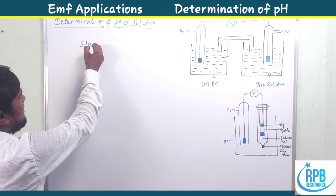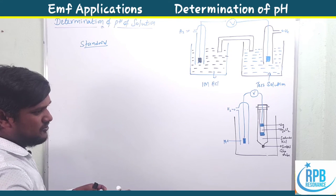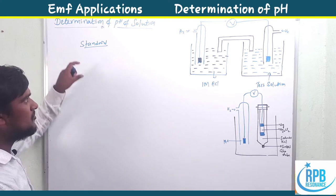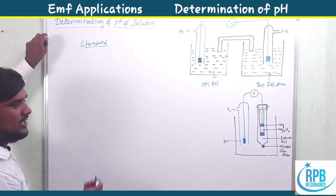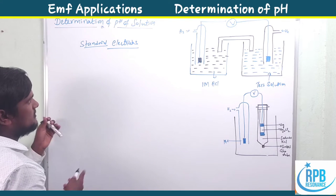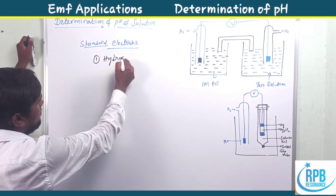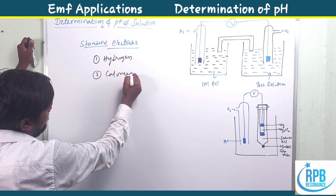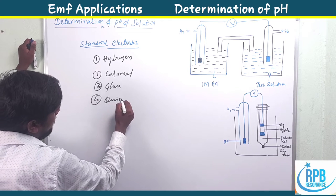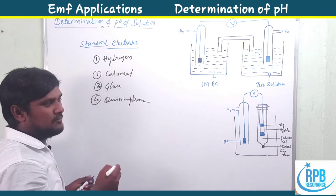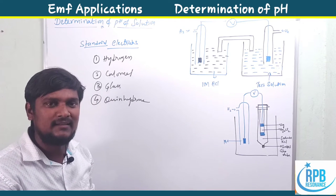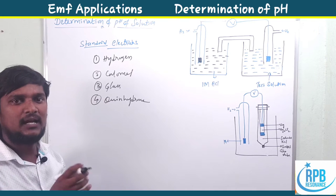The known solution is taken as one half-cell and the unknown solution as another half-cell. The commonly used standard electrodes are: the hydrogen gas electrode, the calomel electrode, the glass electrode, and the quinhydrone electrode. These four are the commonly used standard electrodes with which we can easily find the pH value of any unknown solution.